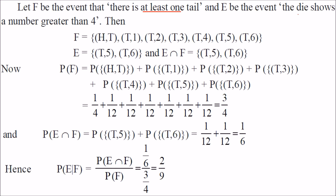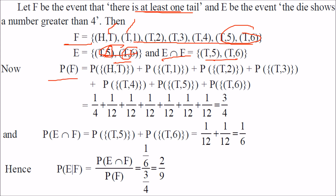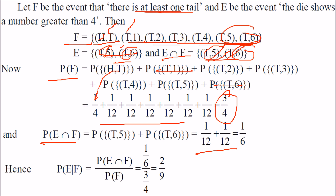F = {HT, T1, T2, T3, T4, T5, T6}, so P(F) = 1/4 + 6×(1/12) = 1/4 + 1/2 = 3/4. E = {T5, T6}, and E∩F = {T5, T6}, so P(E∩F) = 1/12 + 1/12 = 1/6. Therefore P(E|F) = P(E∩F) / P(F) = (1/6) / (3/4) = 2/9.